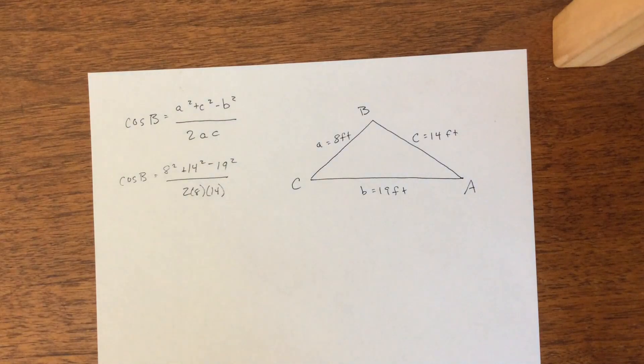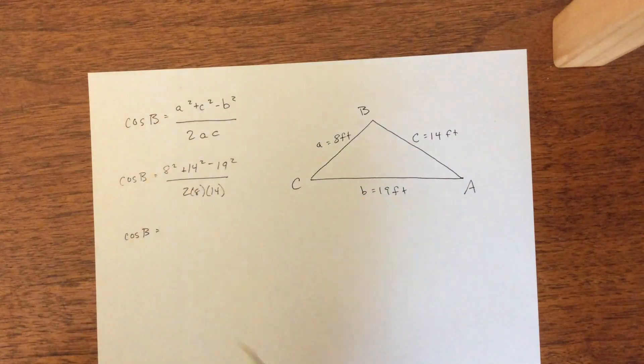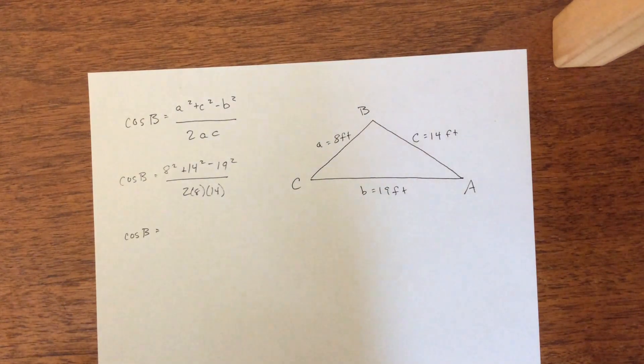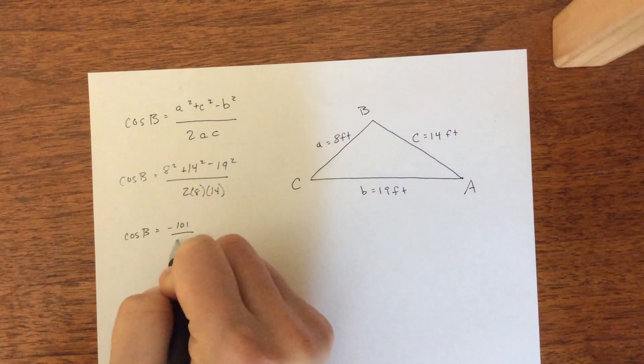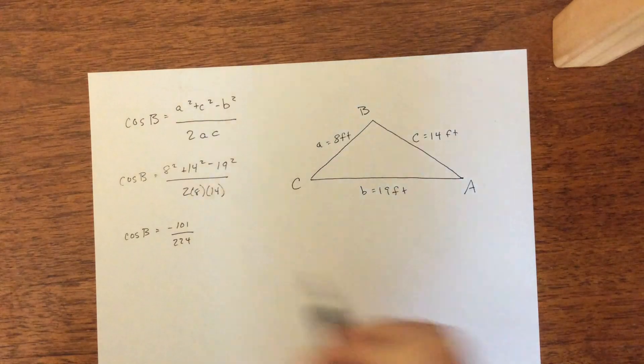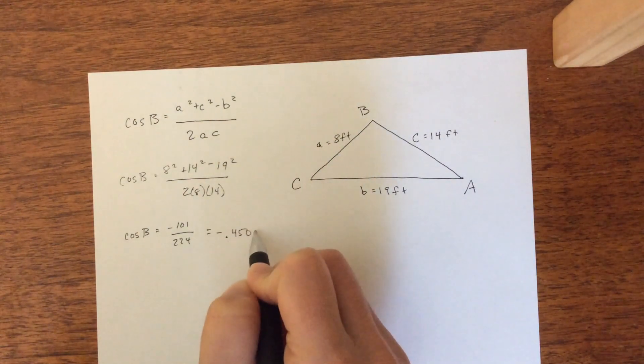So if we punch all this into our calculators, I like to do it in pieces just in case there's order of operation errors in our calculator. But you should get negative 101 over 224. And that would simplify down to negative 0.45089.